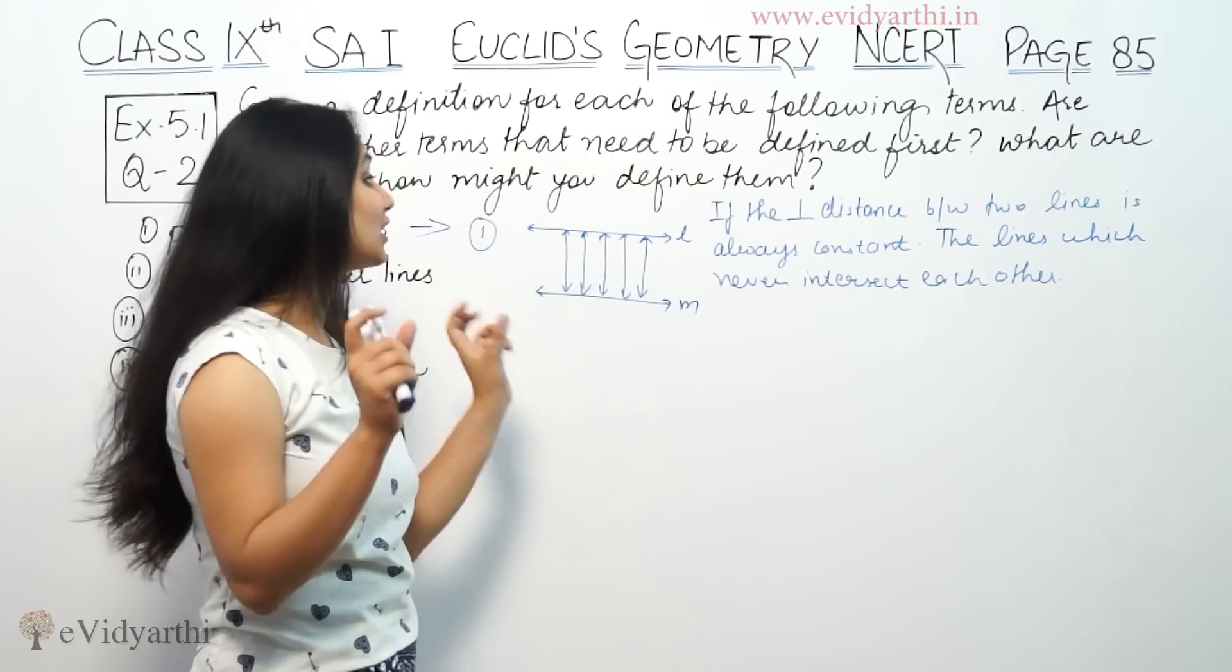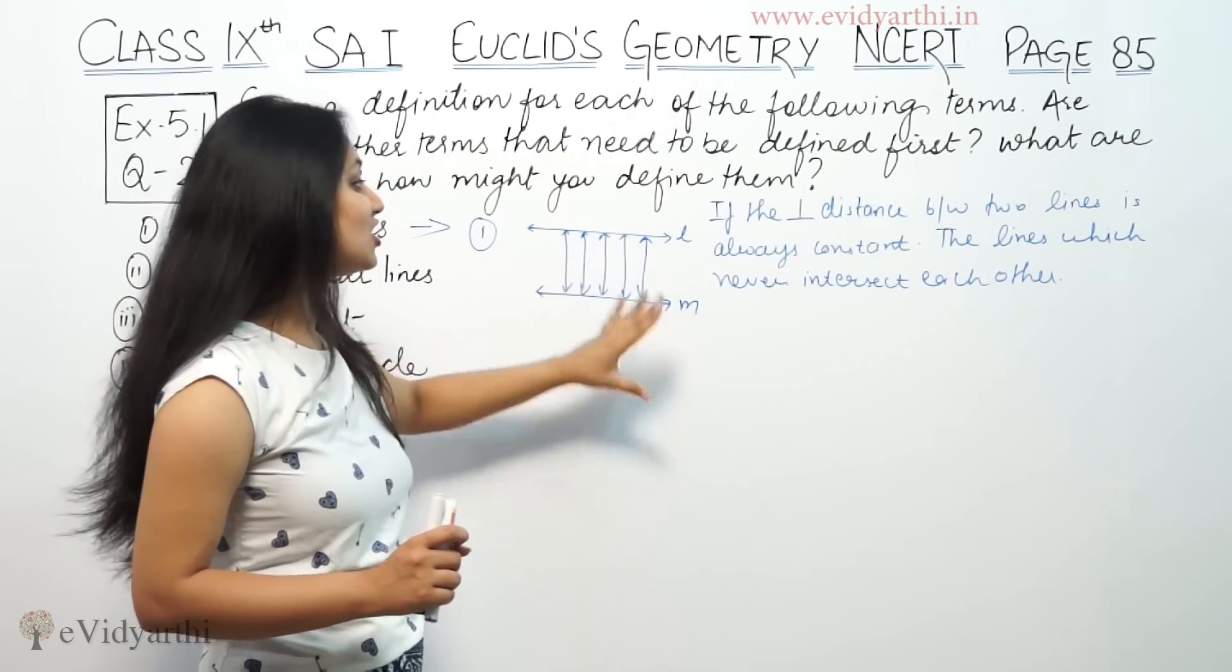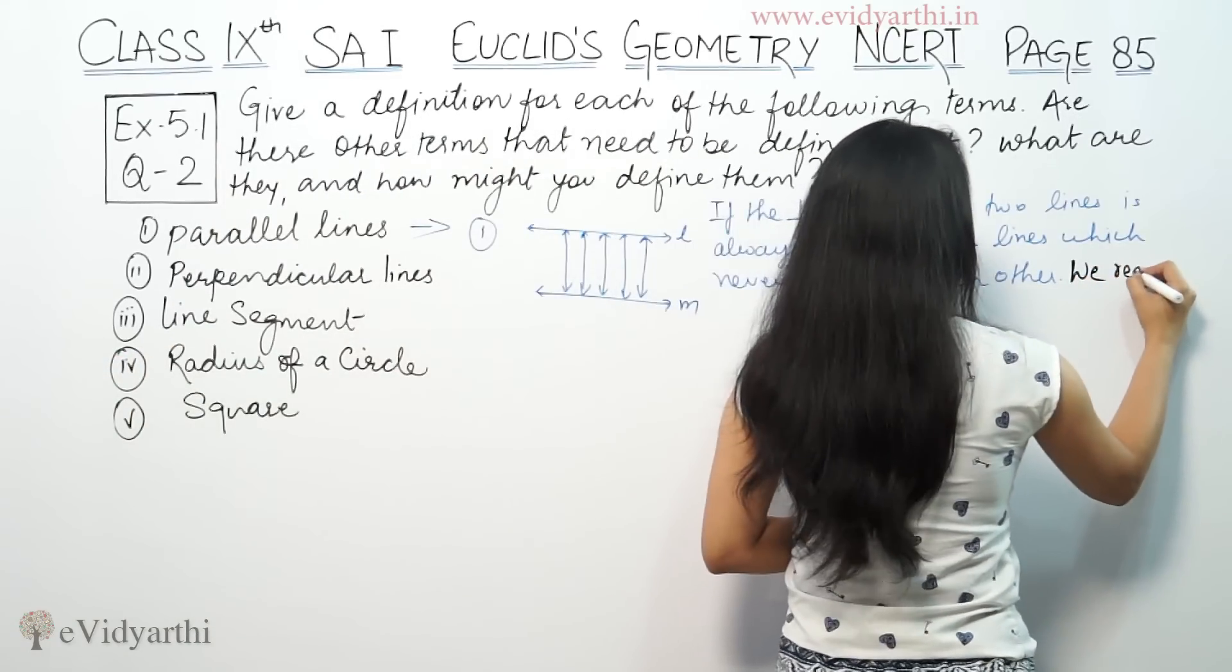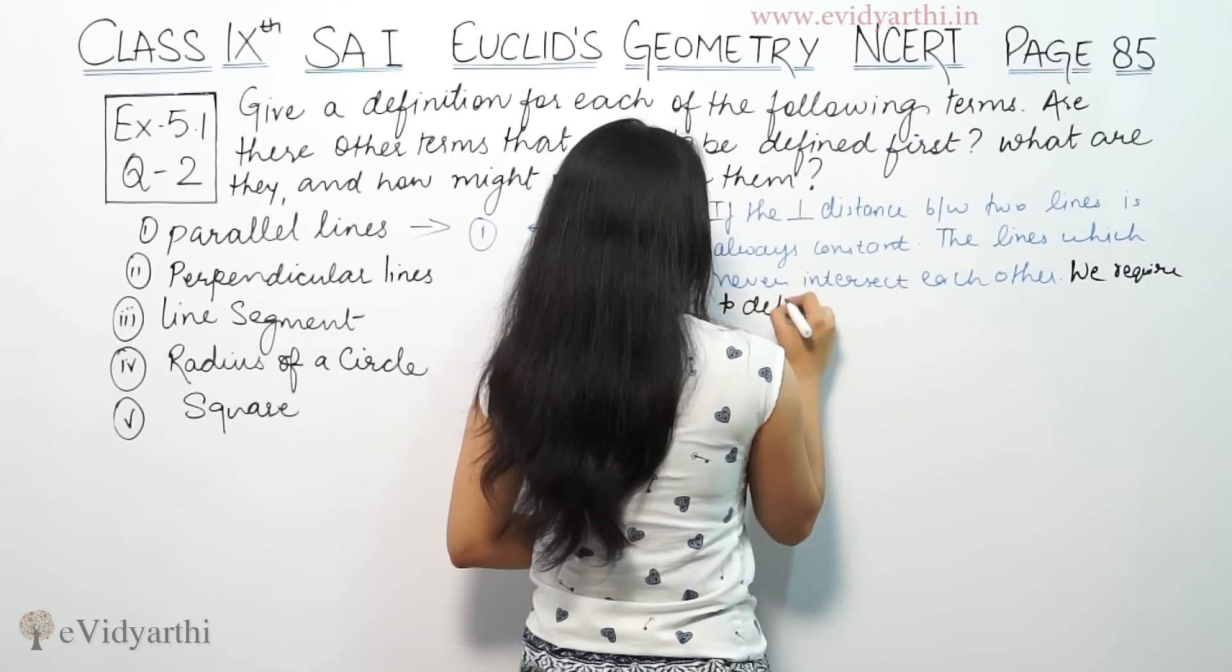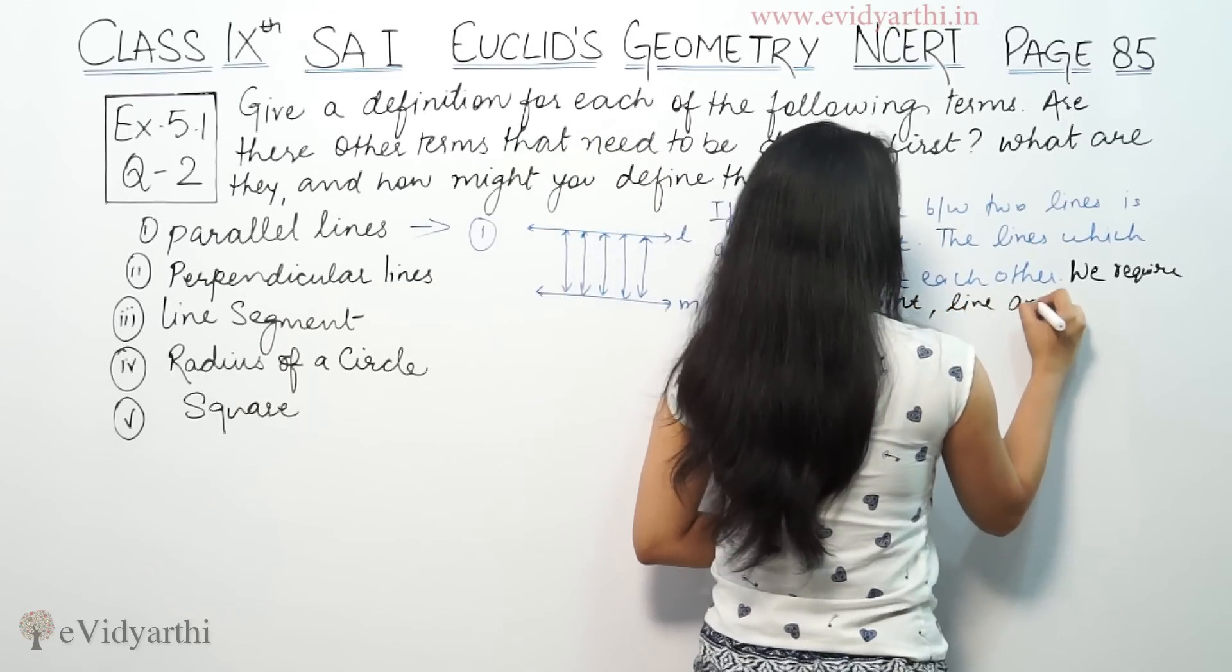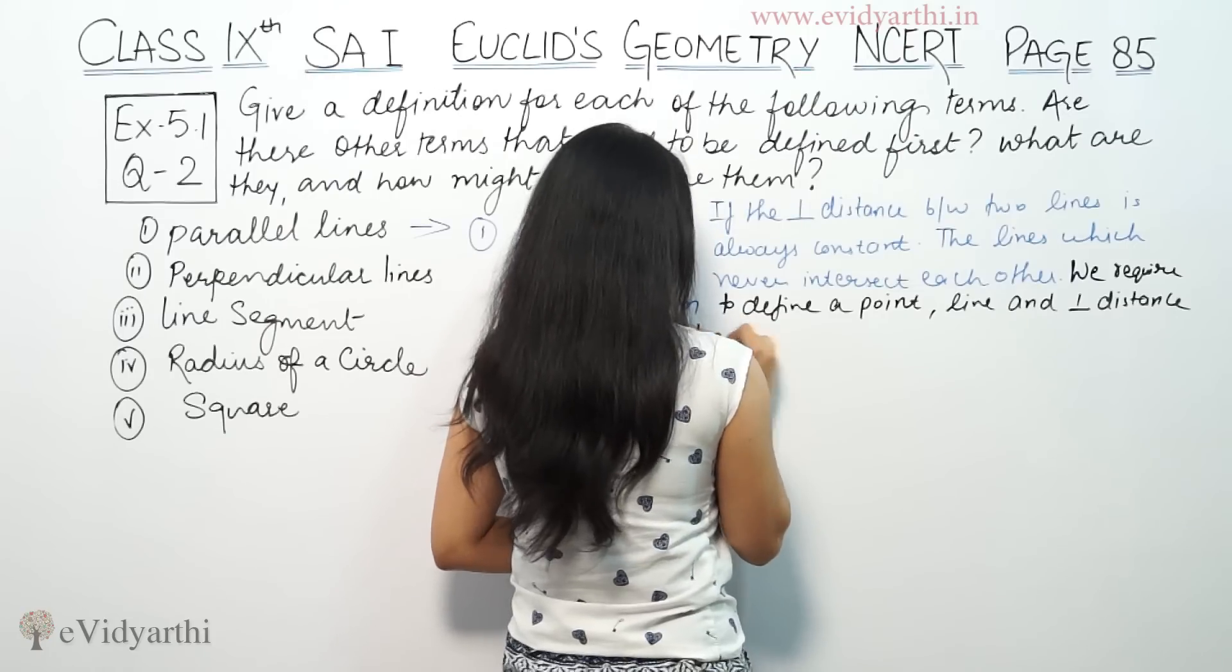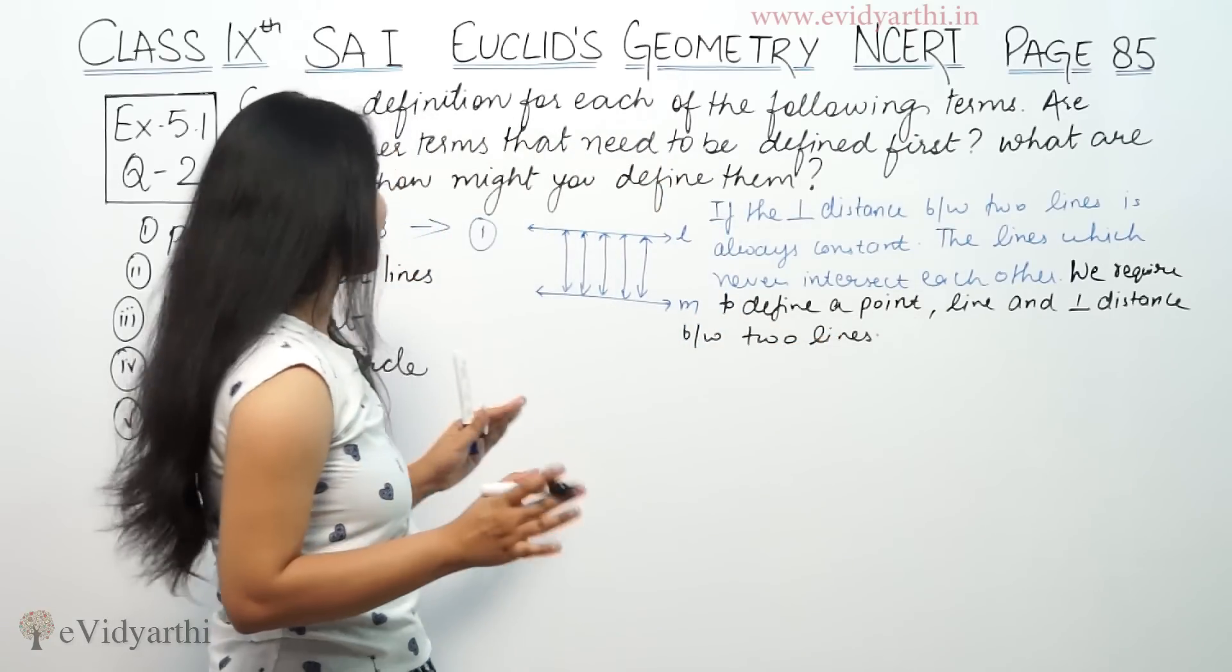What do we need to know about these lines? We need to know about the point, the line, and the distance between the lines. So we require to define a point, line, and perpendicular distance between two lines.